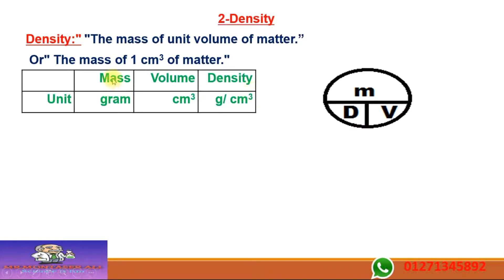The units: mass was in kilograms or grams — try to convert to grams. If given kilograms, multiply by 1000 to get grams. Volume in milliliters is the same as cubic centimeters. So density equals mass divided by volume, giving units of grams per cubic centimeter.